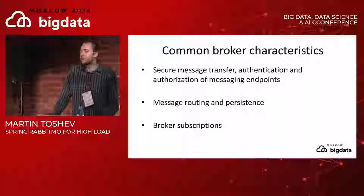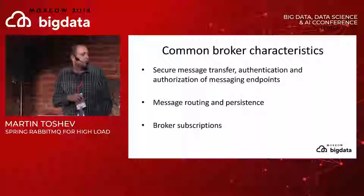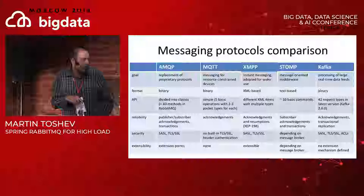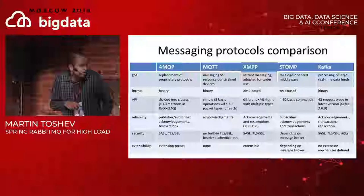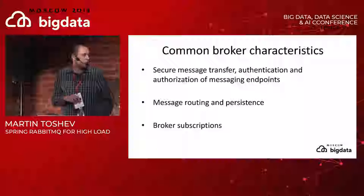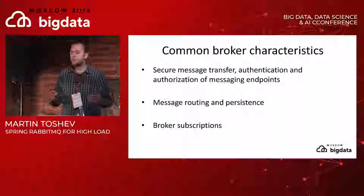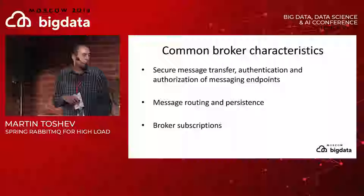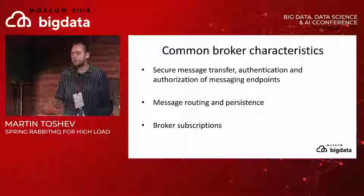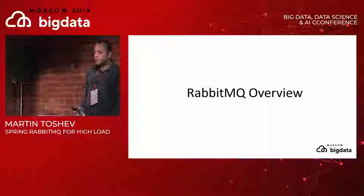There are some common broker characteristics found among all solutions. All of them provide a mechanism for secure message transfer - most provide at least some form of TLS-enabled communication and basic authentication like SASL. Specifically for RabbitMQ and Kafka we have both SASL for authentication and TLS support for message transfer. They also provide message routing and persistence, meaning messages can be persisted so that if the broker crashes they can be recovered on restart. Most brokers also provide a way for subscribers to subscribe and track those subscriptions.